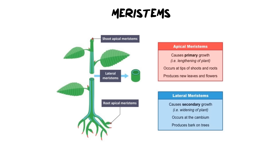Let's begin with looking at the meristems. The meristems are tissue that grow and differentiate into any kind of tissue, and we find them in two major regions. We find them at the tips of a shoot or the tip of the root, which is what we call apical meristems, and then the second location is lateral, which means we find it in the stem and it is responsible for a slightly different kind of growth.